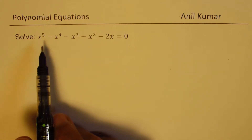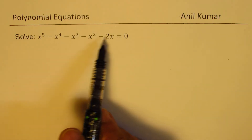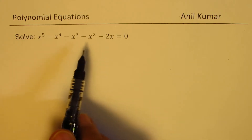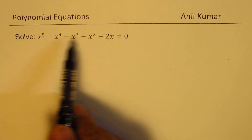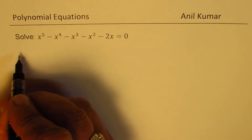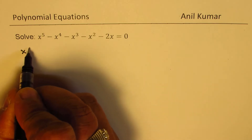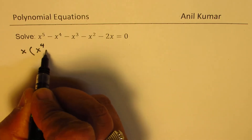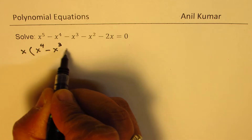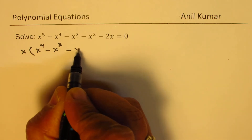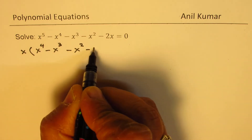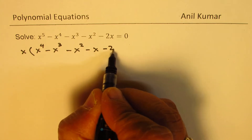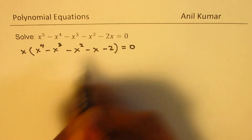Now when we say solve, we need to find all possible values of x. To solve this equation, we can definitely take x common. So in that case, we get x times x to the power of 4 minus x cube minus x square minus x minus 2 equals to 0.